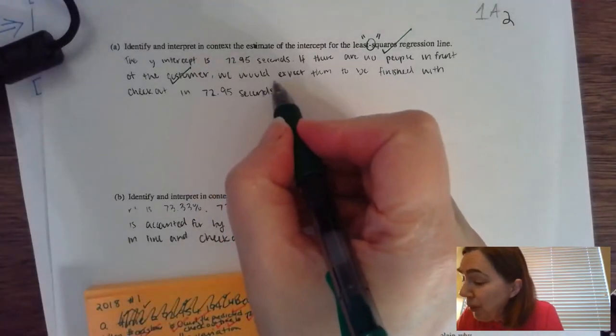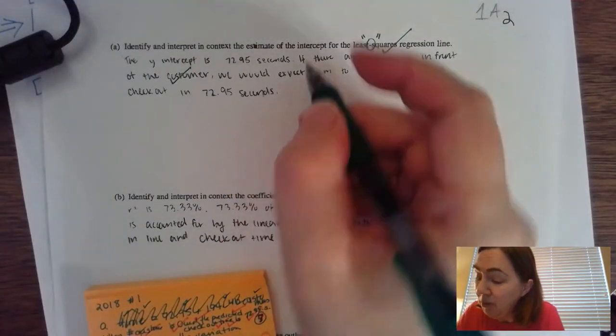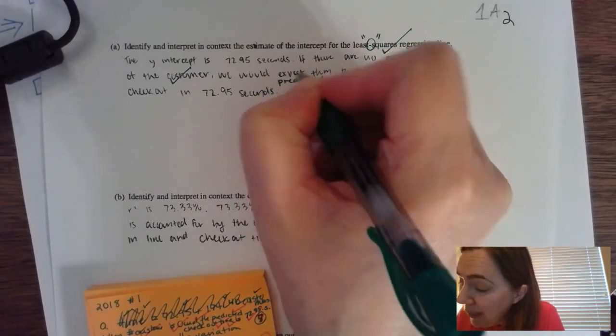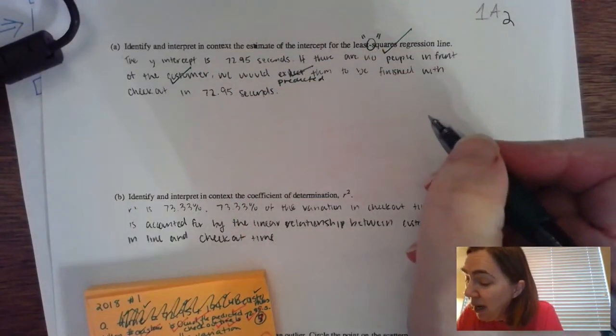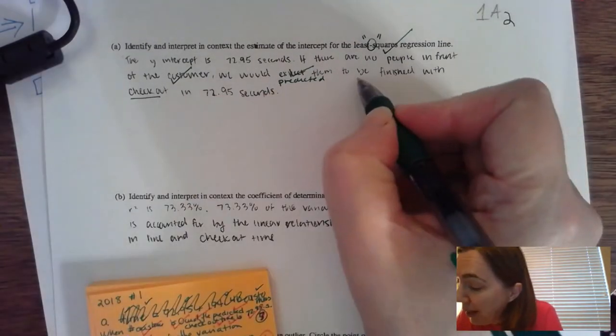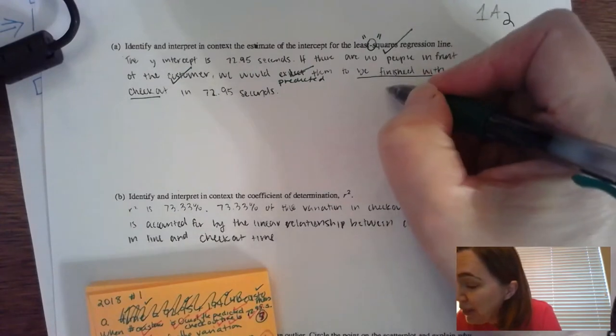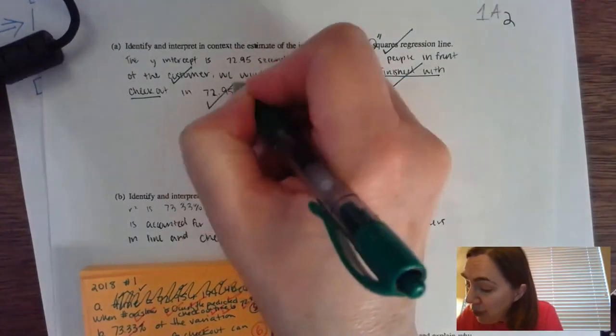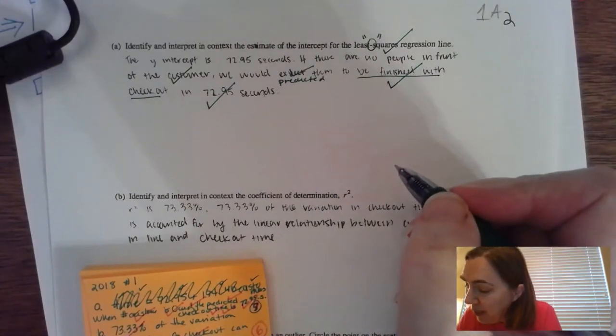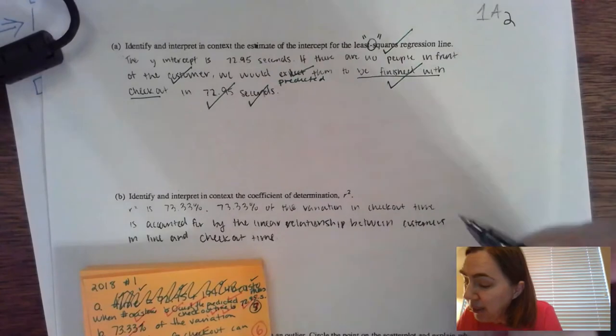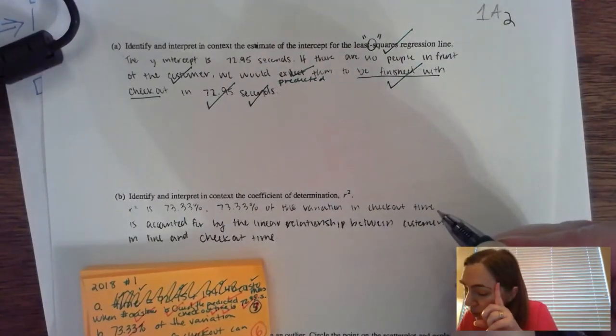My person says we would expect them. So expected means the predicted. I'm going to give credit for the predicted number or amount of time that it takes to finish checkout. That means the y variable, which is the time it takes to checkout, the y-intercept is 72.95. And then there needs to be units right here, which is going to be seconds.